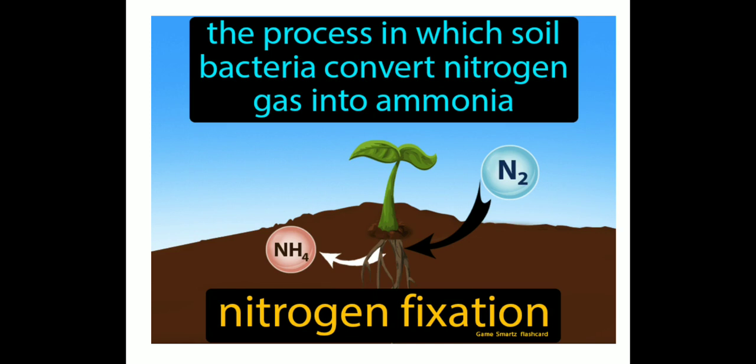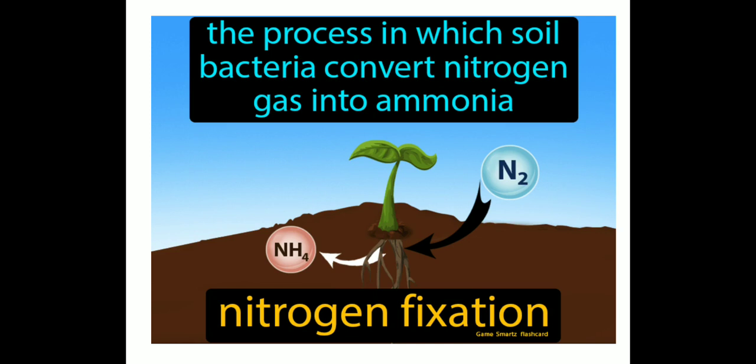Sometimes nitrogen also gets fixed through the action of lightning, but the amount of nitrogen in the atmosphere always remains constant. The nitrogen cycle involves several steps: first nitrogen fixation, then nitrogen assimilation, then ammonification, nitrification, and denitrification. Our atmosphere has 78 percent nitrogen gas, which is an essential component of all living organisms.